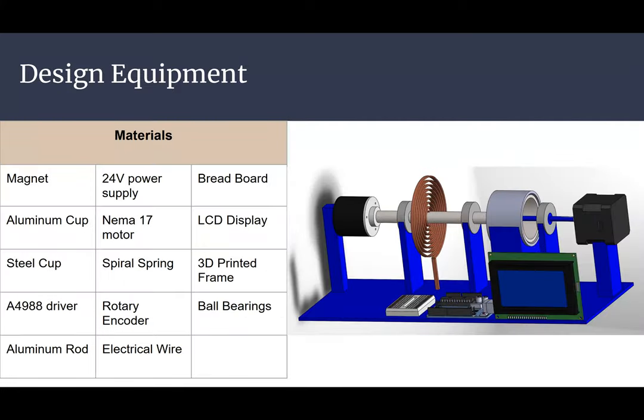For our design equipment, the materials we used were a magnet, a 24 volt power supply, a breadboard, an aluminum cup, a NEMA 17 motor, an LCD display, a steel cup, a spiral spring, a 3D printed frame, an A4988 driver, a rotary encoder, ball bearings, an aluminum rod, and electrical wire.